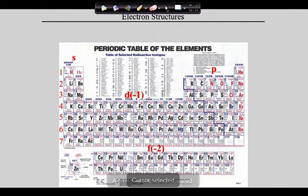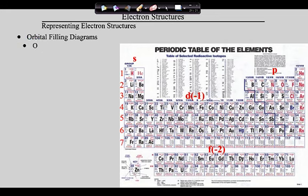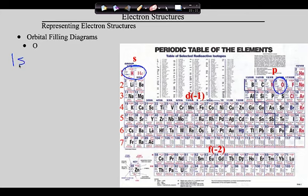Let's draw the orbital filling diagram for oxygen. First, locate oxygen on the periodic table — oxygen is in the 2p sublevel. We can't put electrons in the 2p without first filling the 1s and 2s, so we account for electrons 1 and 2 in the 1s, then electrons 3 and 4 in the 2s, then electrons 5, 6, 7, and 8 in the 2p.